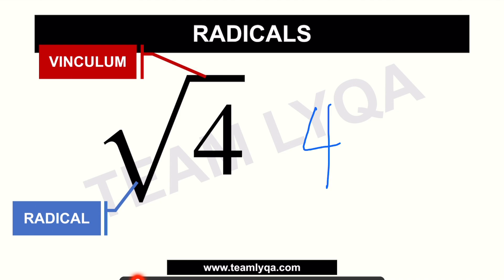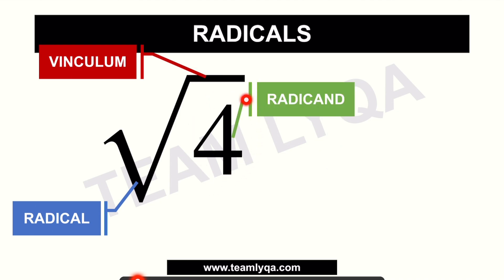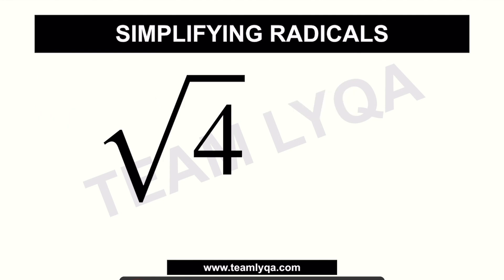Now, yung number na nasa ilalim nung payong or ilalim nung vinculum natin, yung tinatawag natin radicand. And if there is a number right here sa taas — for example, you have the number two — that is what we call the index. Yung index na yan determines kung ano yung hinahanap natin or ano yung pwede natin ilabas dun sa ating radical, and we'll talk about that as we simplify.